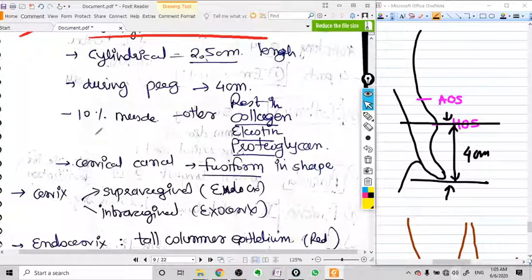As I already told you, the cervix is made up of 10 percent muscle only, and 90 percent is collagen, elastin, and proteoglycans. Why is it composed like that? Because it will make a very important place in cervical effacement at the time of labor.